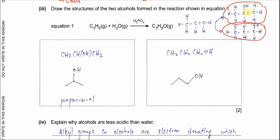Propan-2-ol has the structure CH₃CH(OH)CH₃ — this skeleton formula is given in the mark scheme. Propan-1-ol has the structure CH₃CH₂CH₂OH. Place these two structures into the respective boxes.